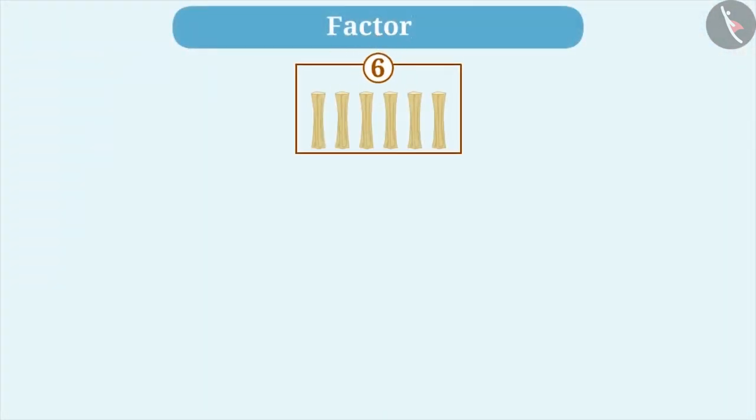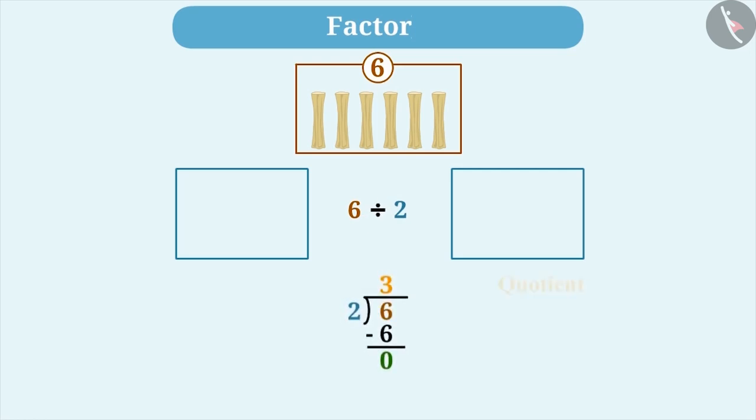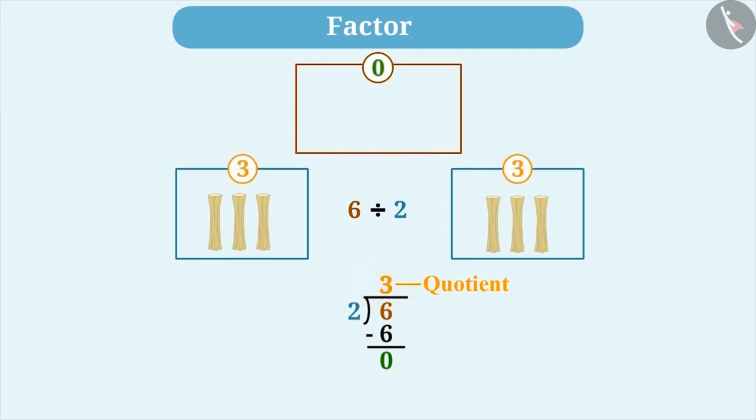Here we see 6 sticks. If we have to divide them equally between two groups, then how will we do it? We have to divide 6 by 2. On dividing, we get 3 as quotient and the remainder is 0. From this, we get to know that each group gets 3 sticks.